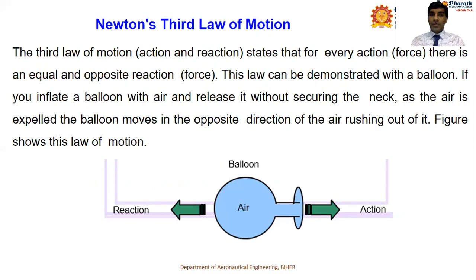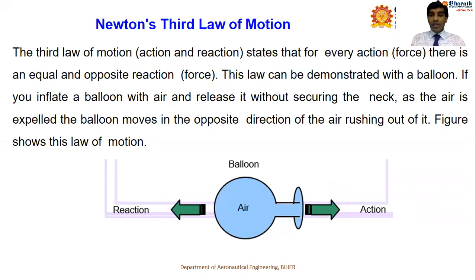Newton's Third Law of Motion states that for every action there is an equal and opposite reaction. This can be demonstrated with a balloon: if you inflate a balloon and release it without securing the neck, the air is expelled and the balloon moves in the opposite direction. A rocket also works on the same principle — Newton's third law of equal and opposite reaction.